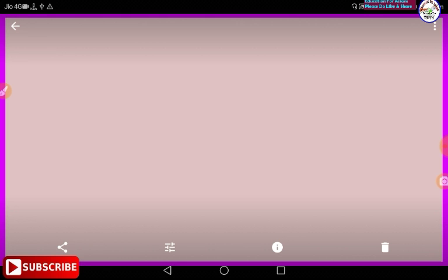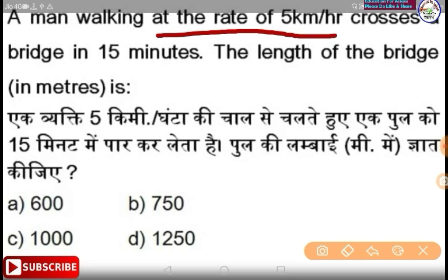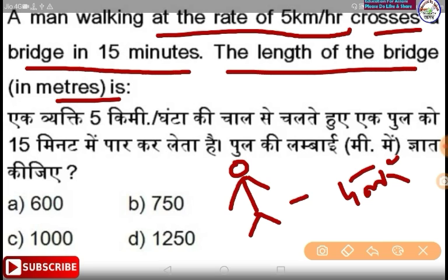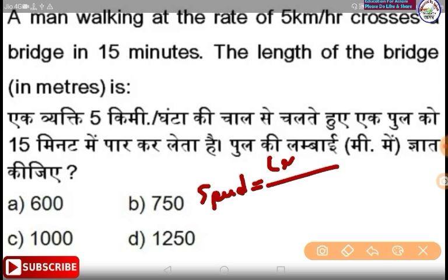The first question is: a man walking at the rate of 5 km per hour crosses a bridge in 15 minutes. The length of the bridge is? The bridge is crossed at 5 km per hour. The formula of speed is equal to distance divided by time.